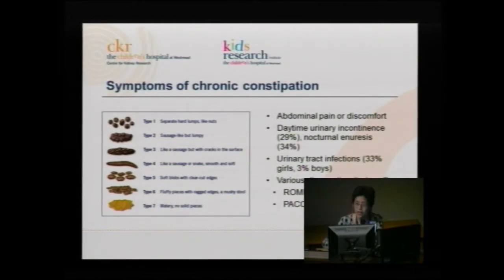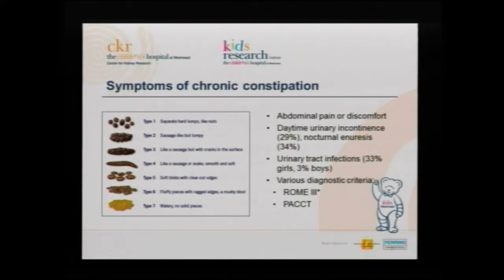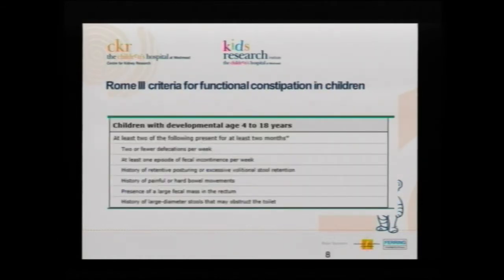I love the Bristol stool chart — I wear it around my neck. Type 7's running out because my finger holds that spot. What are the symptoms of chronic constipation? Abdominal pain or discomfort. It's associated with daytime urinary incontinence and nocturnal enuresis — a third of kids with constipation actually have wetting. It's also associated with urinary tract infections, particularly in girls.